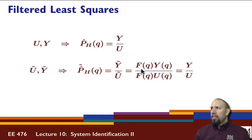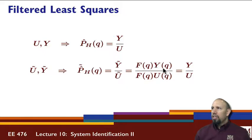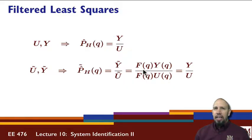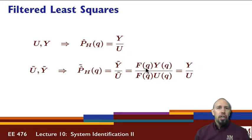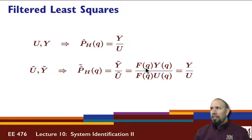The advantage is that we can filter the signals — it's usually the y signal that needs the filtering — to eliminate some noise and clean up our signals before we do the system identification. Now the question becomes, what do we choose for a filter? If you already know something about the noise characteristics, you can use a matched filter, a Wiener filter, or other kinds of optimal filters. Otherwise, we can create a filter for this process.